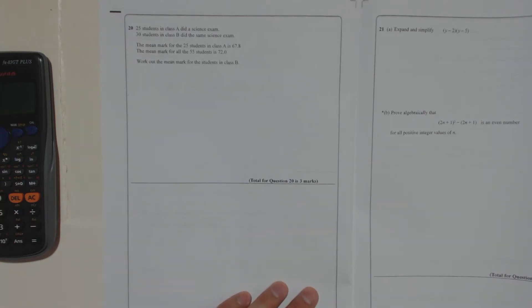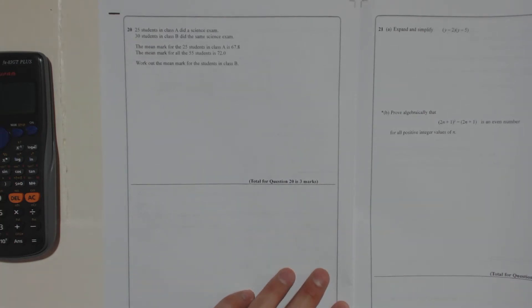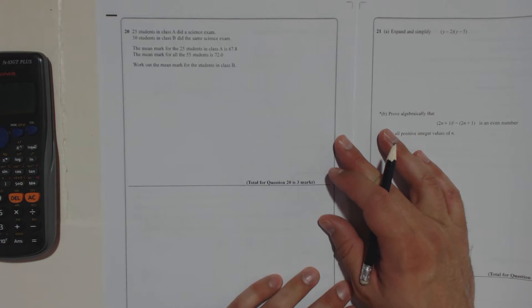Question 20. 25 students in class A did a science exam. 30 students in class B did the same science exam. The mean mark for the 25 students in class A is 67.8. The mean mark for all the 55 students is 72.0. Work out the mean mark for the students in class B.